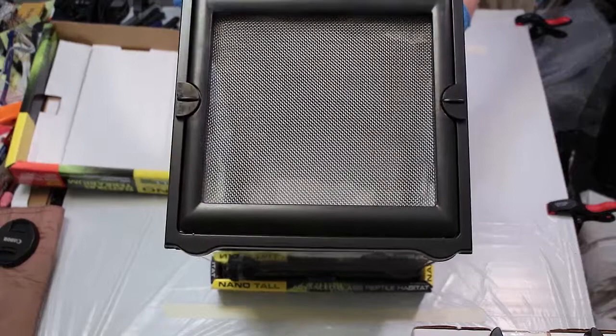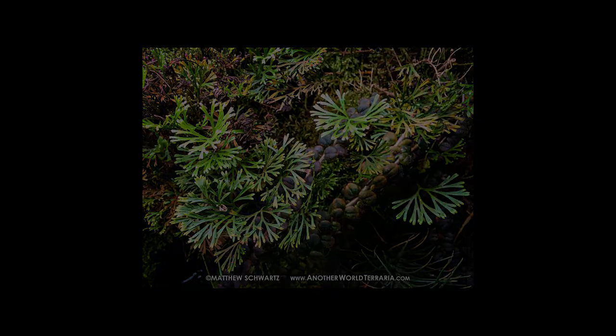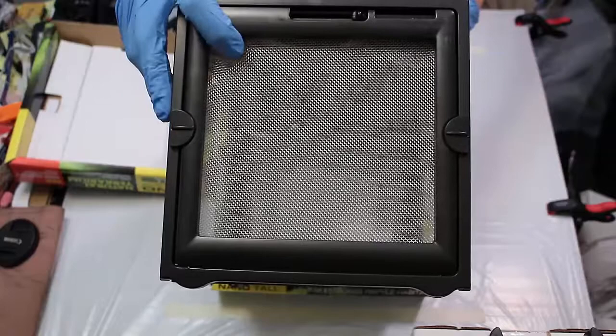The reason why you need to convert these is because if you look at the lid here, it has a screen mesh. When you're growing tropical plants, this would be too much ventilation and the plants dry out and there's not enough humidity. So you need to actually remove the screen and put in a glass panel.